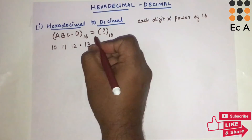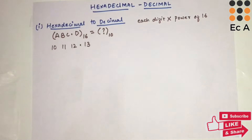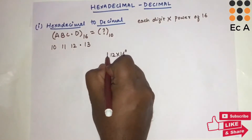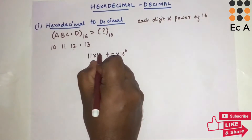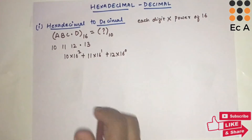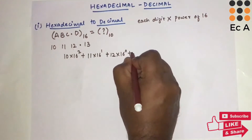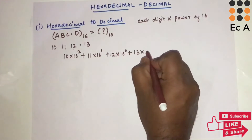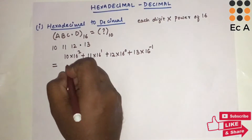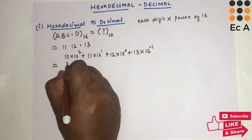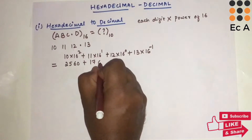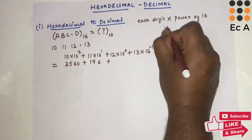Now we convert this number to its decimal equivalent. We take C (12) multiplied by 16 to the power of 0, plus B (11) multiplied by 16 to the power of 1, plus A (10) multiplied by 16 squared. Towards the right-hand side we have D (13), multiplied by 16 to the power of minus 1. Solving: 10 × 16² = 2560, plus 11 × 16 = 176.